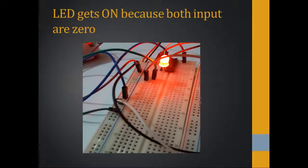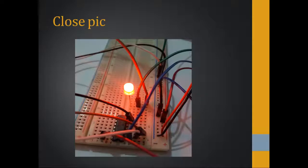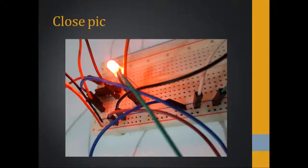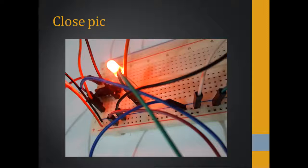Now the LED gets on because both inputs are zero. As I told you earlier about the truth table of the NAND gate — when both inputs are zero, meaning there is no source for either input, the LED will turn on. This proves the first condition of the truth table. Here are some close-up pictures of the connections so you can see the wiring more clearly.